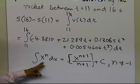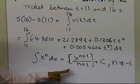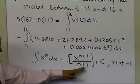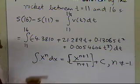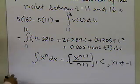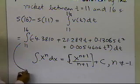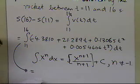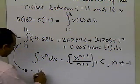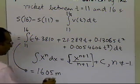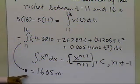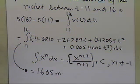We can use this concept that the integral of x to the power n equals x to the power n plus 1 divided by n plus 1 plus the constant, and apply it here. What we get from here will be the distance covered, which will be 1,605 meters. That's what we're estimating for the distance covered by the rocket between 11 and 16 seconds.